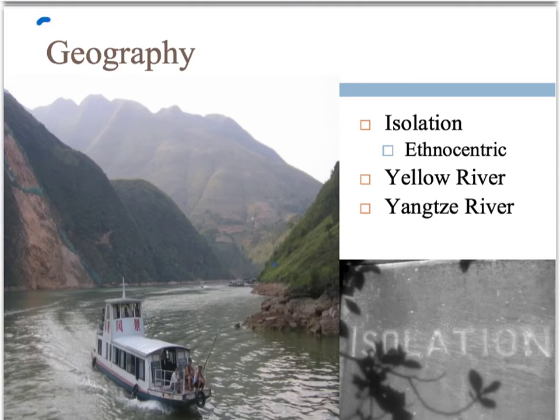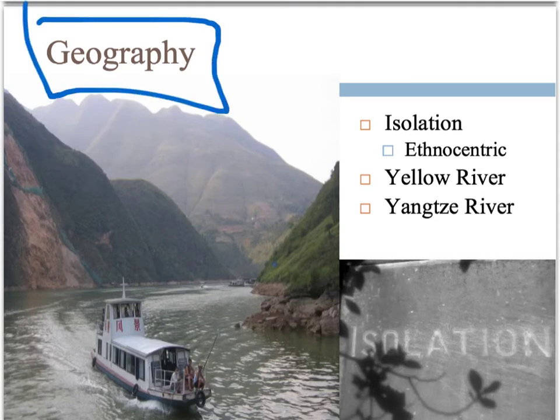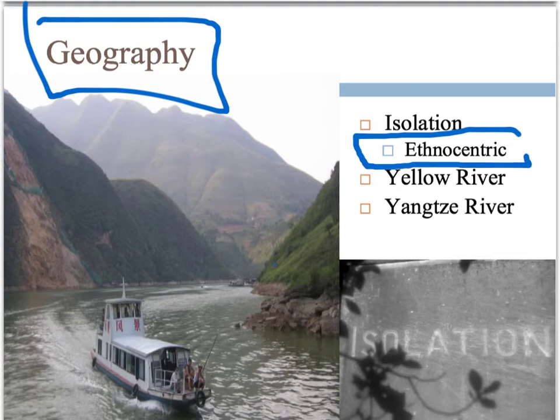Let's talk about the geography. China developed relatively isolated — one third of China is mountainous, and you also have the Gobi Desert and the Himalayas surrounding it. They developed what we call ethnocentrism, which is a belief that your culture is better than others. And if you're looking at ancient China, that's very much the case, because their culture was more advanced compared to the barbarians — the people on the outside. So they developed in relative isolation, doing their own thing, and as a result of this, they kind of thought they were better.